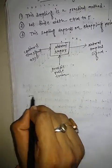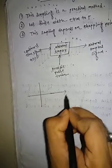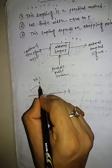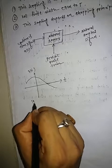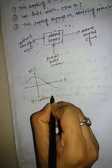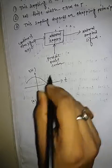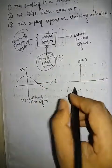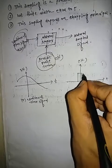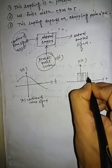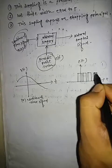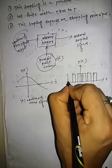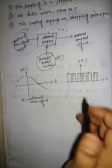The continuous time signal is plotted with axes T and XT. The second signal is the periodic pulse train, denoted by CT. The time period of the pulse train is Ts.